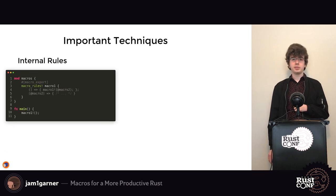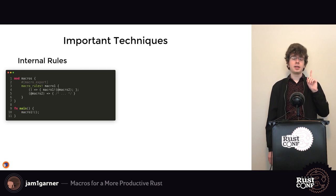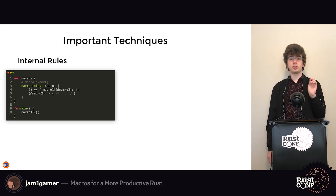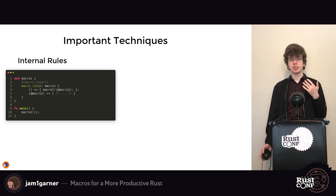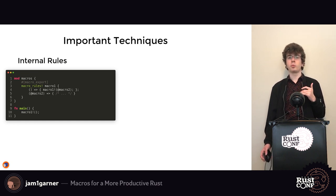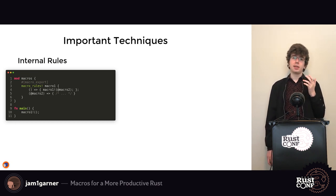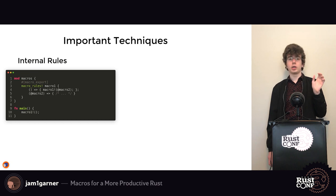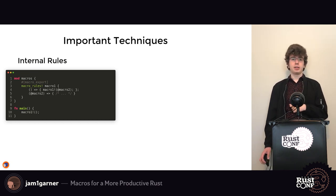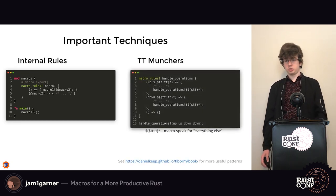To fix this, we collapse the two macros into one using internal rules. Internal rules are patterns that start with `@` — that's just convention, but it's recommended because `@` isn't used often in Rust syntax so it won't cause collisions. Since our previous macro was called macro two, we instead have a rule matching `@macro_two`. Macro one can then recursively call itself, passing `@macro_two` at the start of the input to trigger the internal rule.